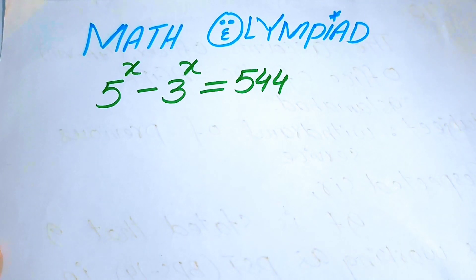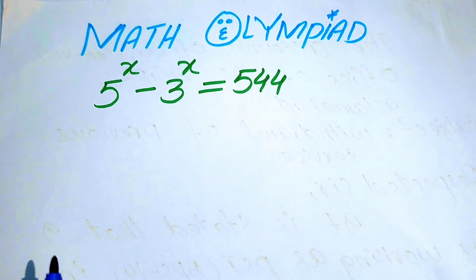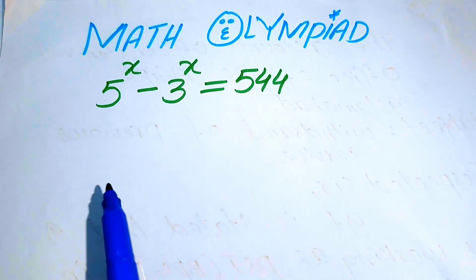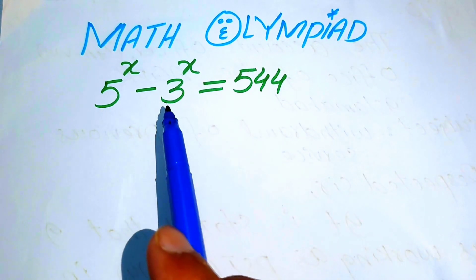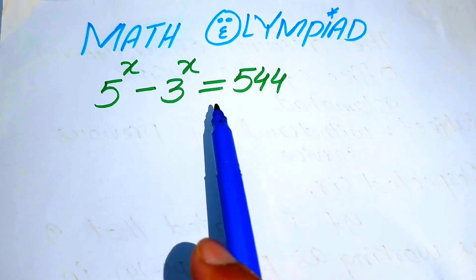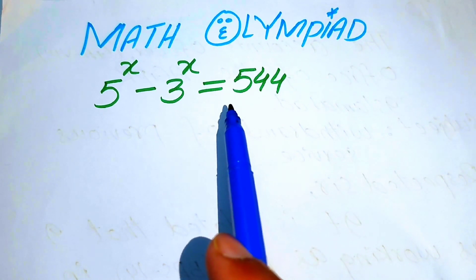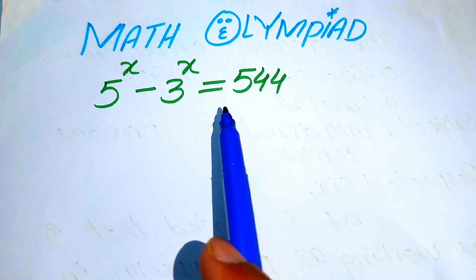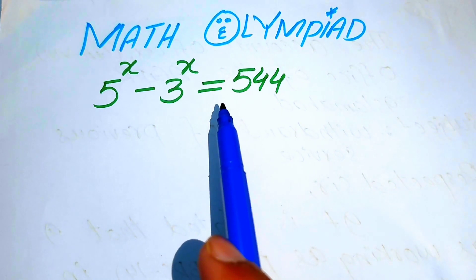Hello everyone, welcome. We solve this math problem involving exponentials: 5 to the power of x minus 3 to the power of x equals 544, and we solve this problem for the value of x.